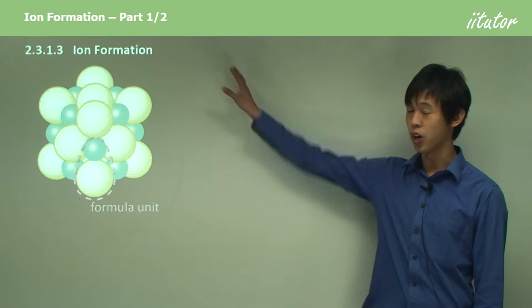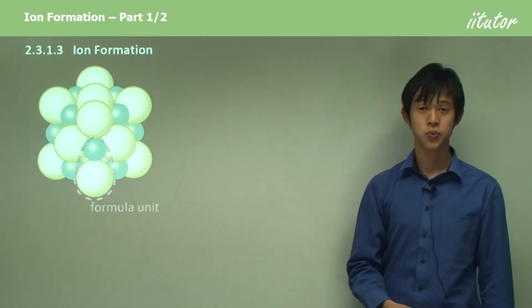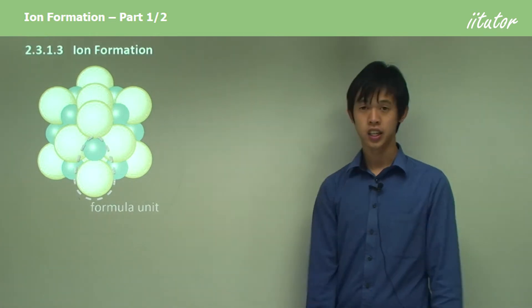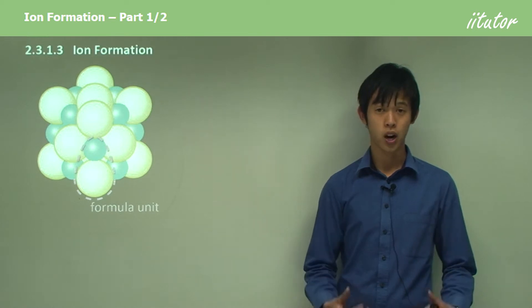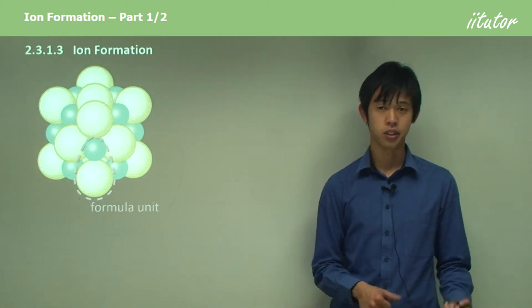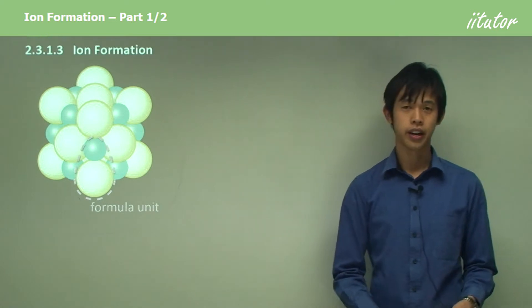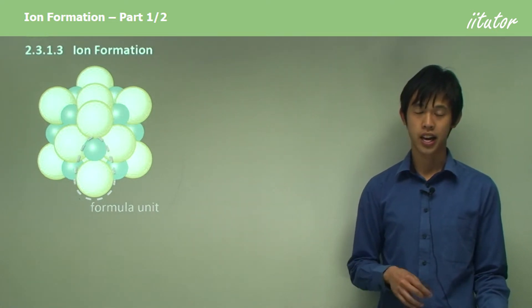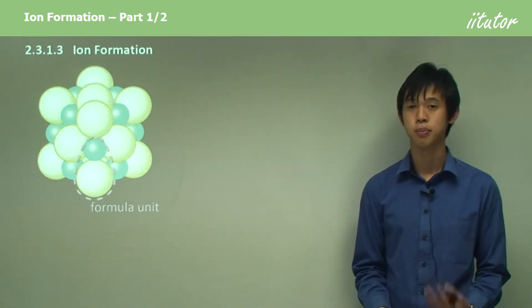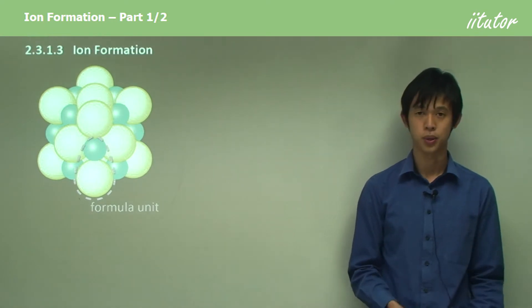So today's lesson will be on the chemical earth, and in today's lesson we're going to look at ion formation. In the previous lesson we looked at why chemicals are unstable or stable, and in this lesson we're going to look at one way that atoms can achieve stability by exchanging electrons with one another.